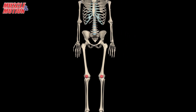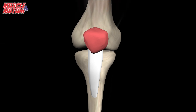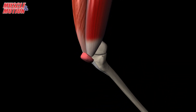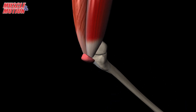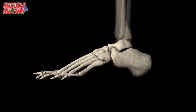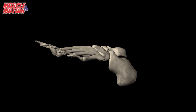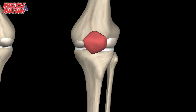Finally, we have the sesamoid bones. A sesamoid bone is a small bone commonly found embedded within a muscle or tendon near joint surfaces. It functions as a pulley to alleviate stress on that muscle or tendon. Unlike other bones, which connect via joints, sesamoid bones connect to muscles via tendons. Sesamoid bones are commonly located in the foot, hand, and wrist, with the patella being the largest and most well-known sesamoid bone.